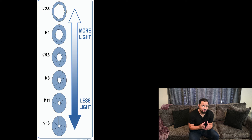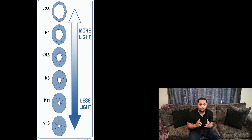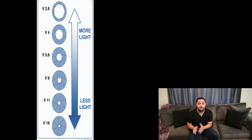The bigger the hole within the lens — the bigger the pupil — the more light comes in. The smaller the hole, or the smaller the pupil, the less light that comes in. That's pretty much what aperture is: it determines how much light you want in the camera or how much you don't, by adjusting the aperture.